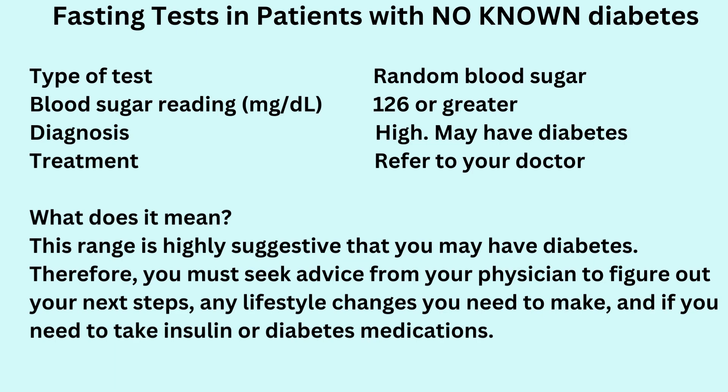If the blood test you had was a fasting blood sugar and you got a reading above 126 milligrams per deciliter, then your blood sugar level is considered high. This range is highly suggestive that you may have diabetes. Therefore, you must seek advice from your physician to figure out your next steps, any lifestyle changes you need to make, and if you need to take insulin or diabetes medications.